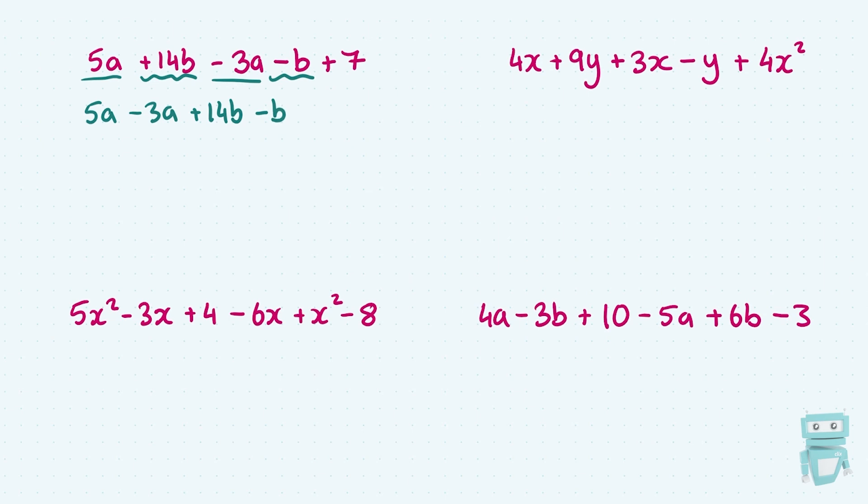And then after that I've got the b's, I'm going to put the plus 14b minus the other b beside each other. And then at the end of the line you can see I've got a plus 7, so that's a constant on its own, a number with no letter is a constant, so the constant there at the end is 7. So that's going to tag along at the end. And now all I do is add and subtract the like ones. So I've got 5a take away 3a, which is 2a, and then I have 14b take away b,